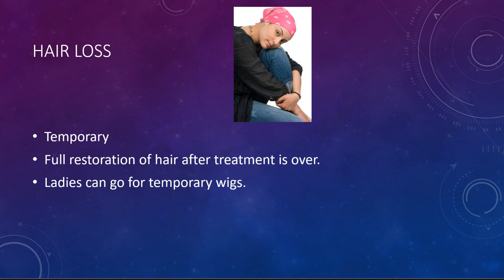What about hair loss? Hair loss can happen in a large number of patients with chemotherapy treatment. The important thing to remember is that the hair loss is temporary — the hair will grow back after treatment is finished, within a couple of months. One need not fear that hair loss is going to be a permanent problem. Secondly, ladies can always use temporary wigs during the phase where hair loss happens.